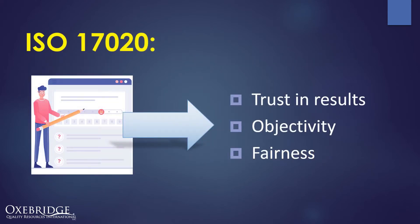So what is ISO 17020? It is a standard published by ISO, the International Organization for Standardization, that defines rules for the operation of an inspection body. The goal is to ensure that the results of an inspection body are trustworthy, and that an inspection body operates objectively and fairly.